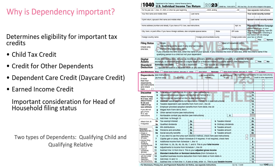There are two types of dependents: qualifying child and qualifying relative. We'll discuss the differences between them soon.